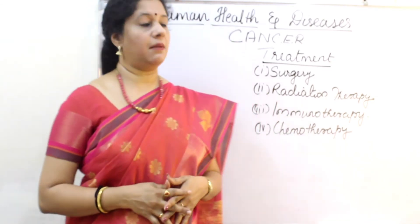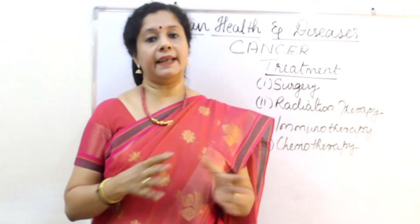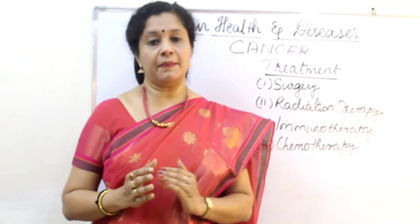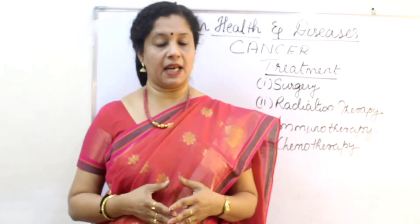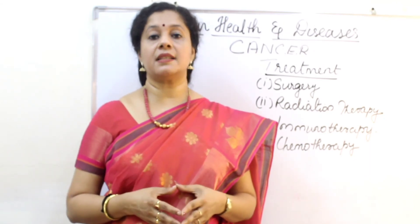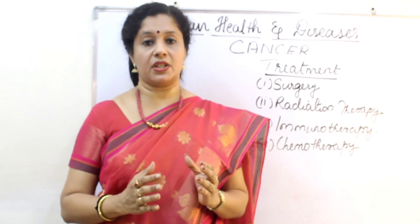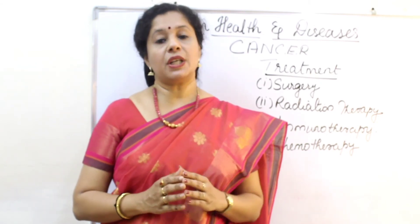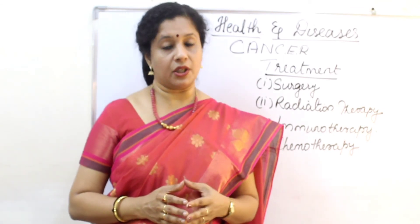Now talking about the treatments available for cancer. First is surgery — we remove the entire tumor and associated lymph nodes surgically to eliminate cancer cells from the body. Following surgery, radiation therapy can be done, where cancer cells are irradiated to kill them, but with very restricted use so that the normal surrounding tissues are not affected. For radiation therapy, cobalt radiation, cobalt therapy, iodine therapy, or X-rays are used.